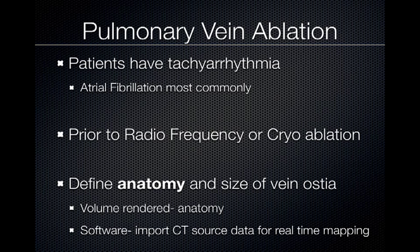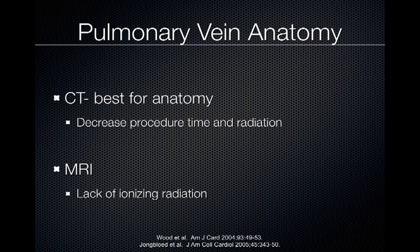We do make some size measurements of the vein ostia, but this is primarily for evaluation when the patient returns with problems such as shortness of breath. Pulmonary vein anatomy can be evaluated using CT, and it has the ability to decrease procedure time and also decrease the amount of radiation the patient receives during the procedure because the anatomy is clearly defined.